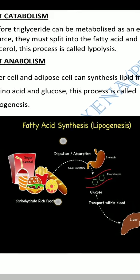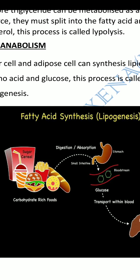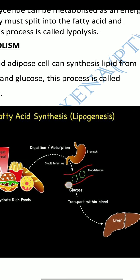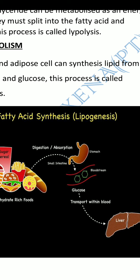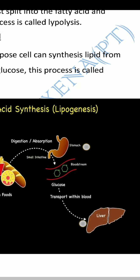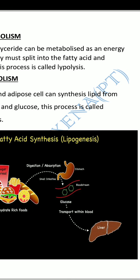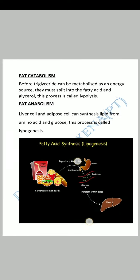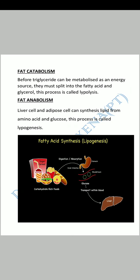For example, when we eat carbohydrate-rich foods, they go through digestion and absorption — through the stomach and small intestine — then into the bloodstream. Glucose from the bloodstream goes to the liver, where it is stored in hepatic cells.